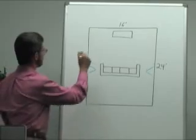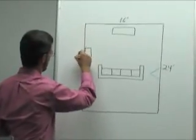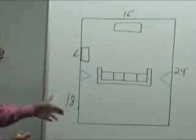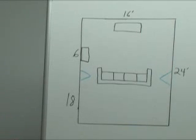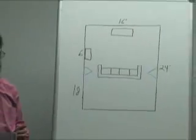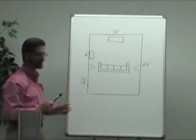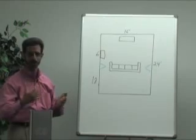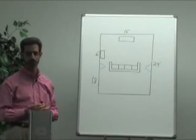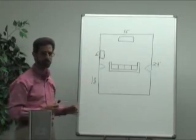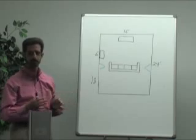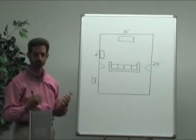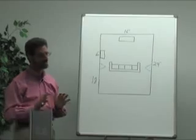Here's what you would not want to do: you would not want to mount the subwoofer six feet down a 24-foot wall, because that will leave you with 18 feet. Six and 18 are whole number multiples of each other — 6 goes into 18 three nice, even times. That's not good as far as subwoofers are concerned, because each room dimension corresponds to a bass frequency. When you have whole number multiples, they reinforce a certain bass note and its direct harmonics, causing a buildup of bass resonances.